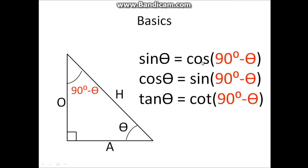Sin theta equals cosine of 90 degrees minus theta. How do you get that? Sine theta is the opposite over hypotenuse. The opposite line for theta is actually the adjacent line for 90 degrees minus theta, and that means A over H, which is cosine. Cosine theta equals adjacent over hypotenuse. Therefore, sin theta equals cosine of 90 degrees minus theta.